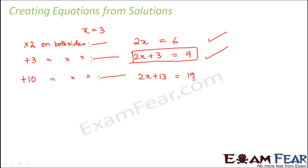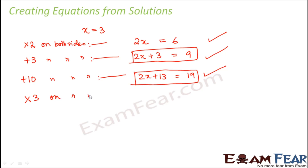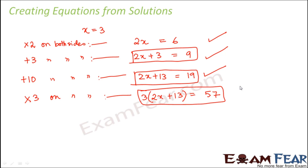If we add 10 on both sides of 2x plus 3 equals 9, it becomes 2x plus 13 equals 19 — also an equation. Then multiplying both sides by 3 gives 3 times (2x plus 13) equals 57, which is also an equation. All of these satisfy the definition of an equation, and that is why they are equations.